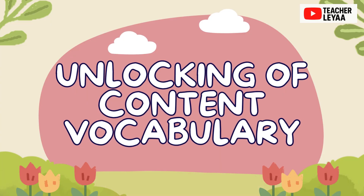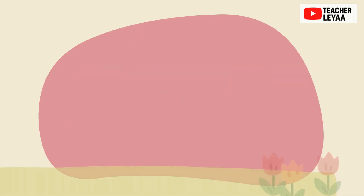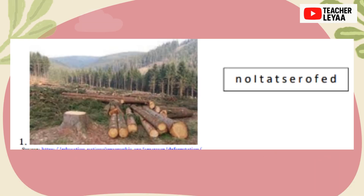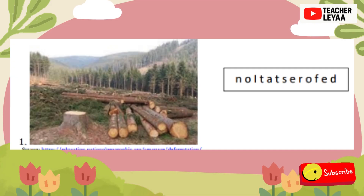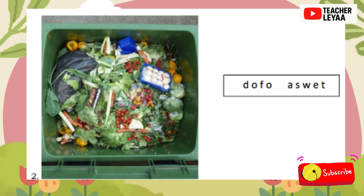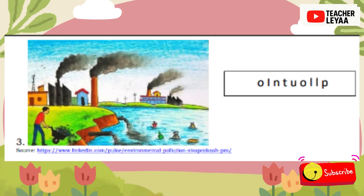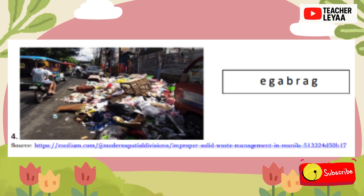First, Unlocking of Content Vocabulary. Look at the picture below. Arrange the letters or words beside each picture to name it. Afterward, give two sentences to describe what's shown in the picture. First Picture. Second Picture. Third Picture. Fourth Picture.